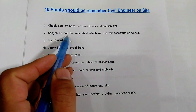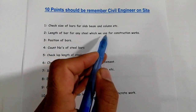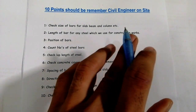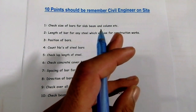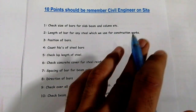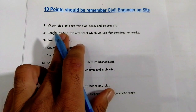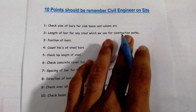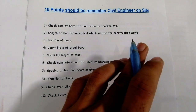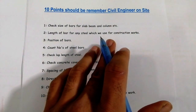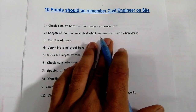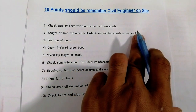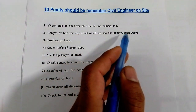The second point is: length of bar. For any steel we use in construction works, we have different cutting lengths for different structures — for beam, column, and slab. You should use a measurement tape to check the length of each bar for different construction structures. For example, if there is a plain beam, column, or slab, check the cutting length of each bar used in your project.